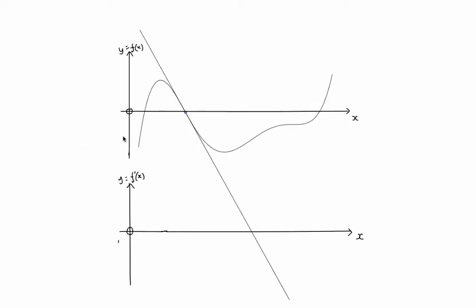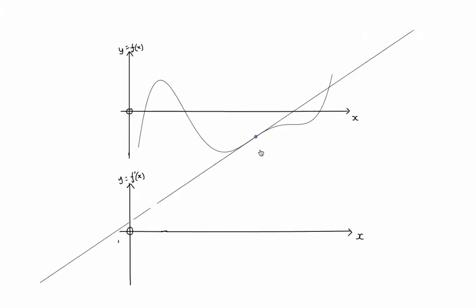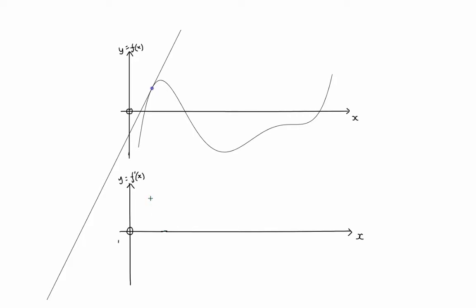Here we have a curve y equals f of x on the top graph and I have a wandering tangent to this curve. What I'm going to do is plot the values of the gradient of this tangent at various points along the curve on this lower graph to get the gradient graph, assuming the scale on each axis is the same. For instance at this point the gradient looks to be around 2, so I'm going to plot a value of 2 to show that at that point the gradient value is 2.